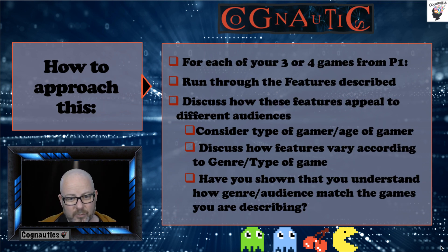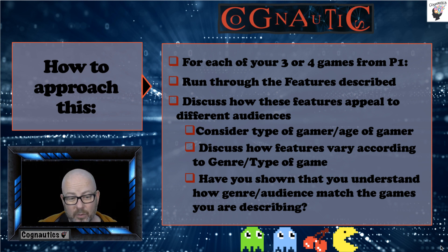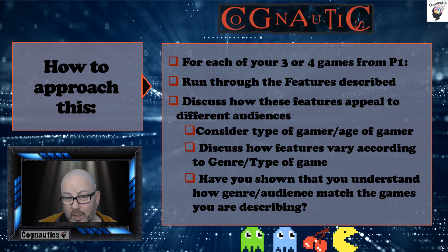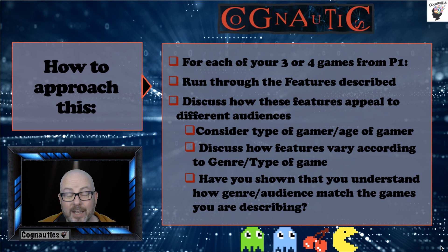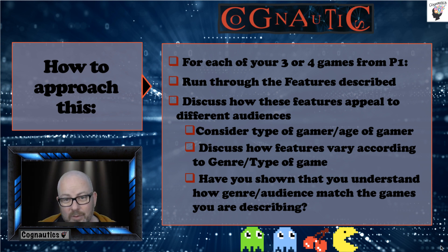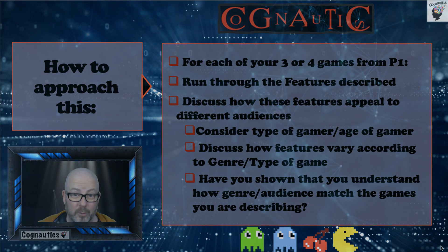Just to recap: pick three games, use those features as a starting point, and discuss how they appeal to different audiences. Talk about the type of gamer — hardcore, midcore, casual, and so on — and the age of the gamer. Discuss how the features vary according to genre and the type of gamer. The key question the moderator will ask is: do you understand how genre, audience, and characteristics of games are all linked, and do you understand what they all mean?